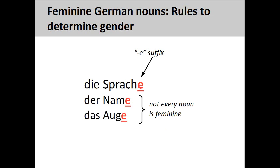Finally, there are quite a few feminine nouns that end in –e, such as 'Sprache,' meaning language. It is generally safe to consider these feminine, but you need to be careful, as a few masculine and neuter nouns also have the same ending.